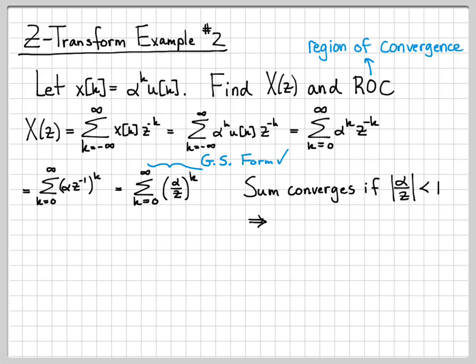If we multiply both sides by magnitude Z, we can rewrite this as magnitude of alpha is less than Z, which is the same thing as magnitude Z being greater than alpha. So this right here is the criteria for this geometric sum to converge. This converges anytime the magnitude of Z is larger than the magnitude of alpha.